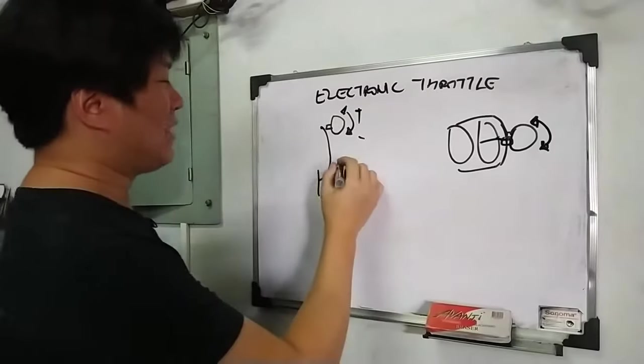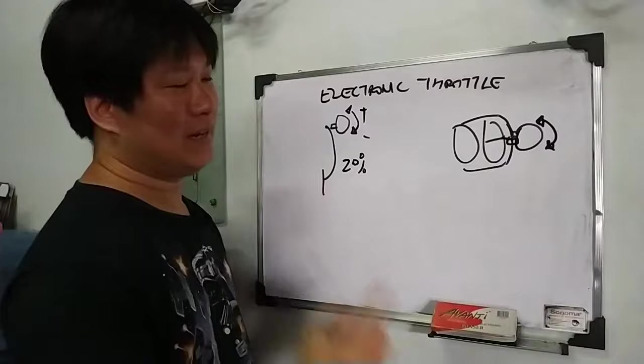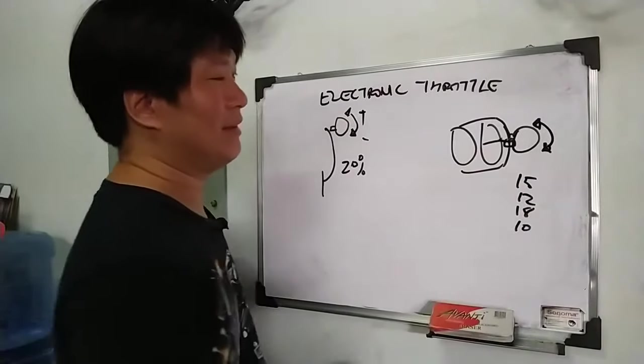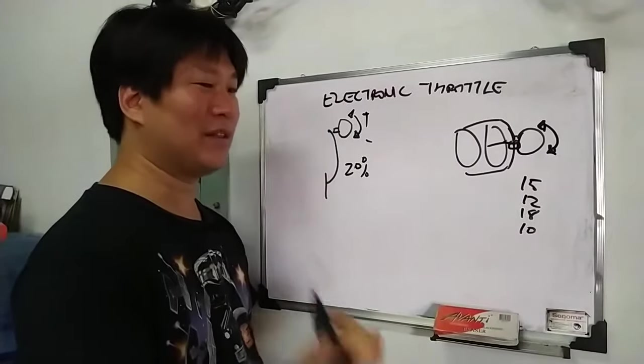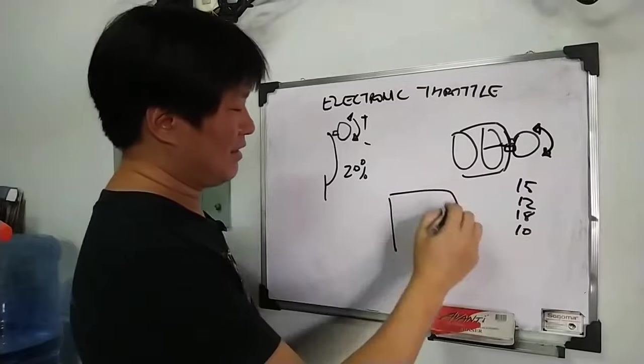What happens now is, if you step on this one 20%, this one, ang bukas niya, not necessarily 20%. It might be 15, might be 12, might be 18, might be 10. Depending on the condition and what the actual program is inside the car's ECU.